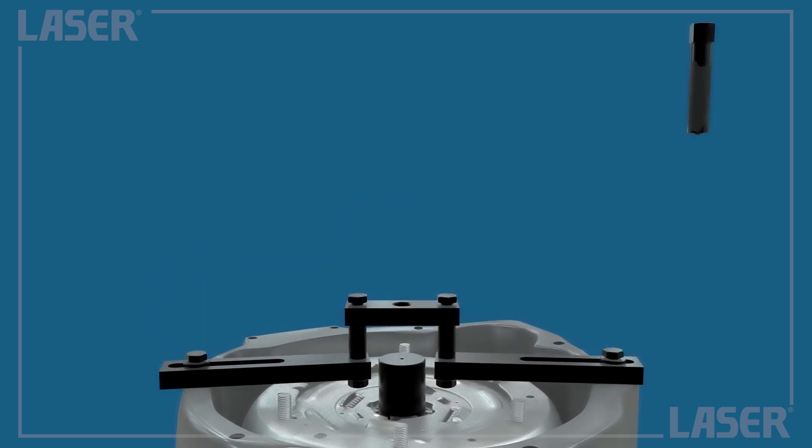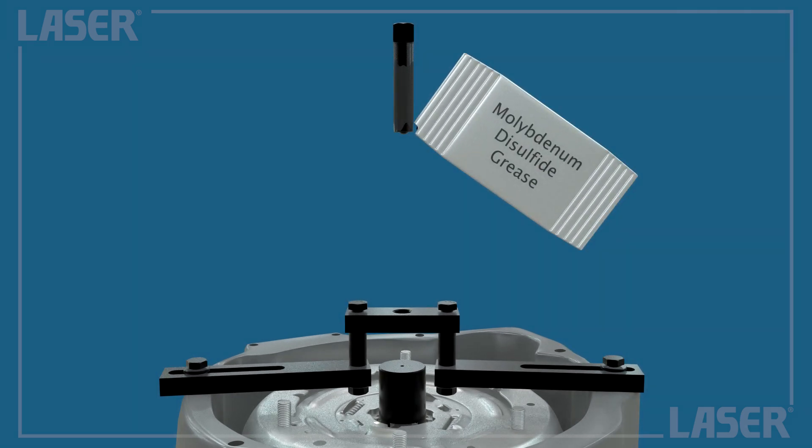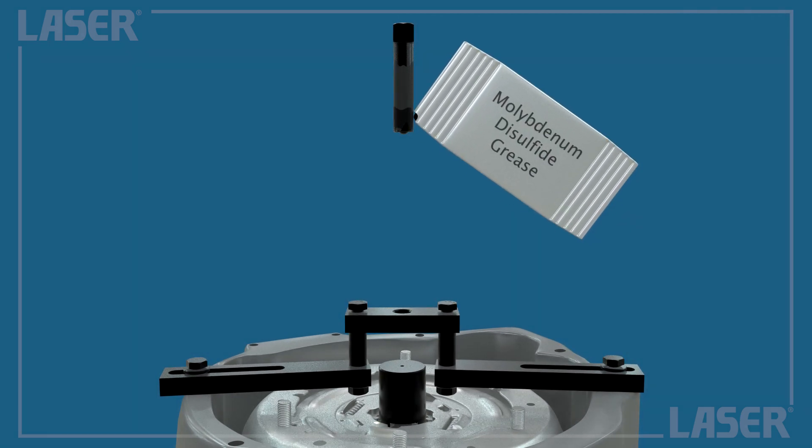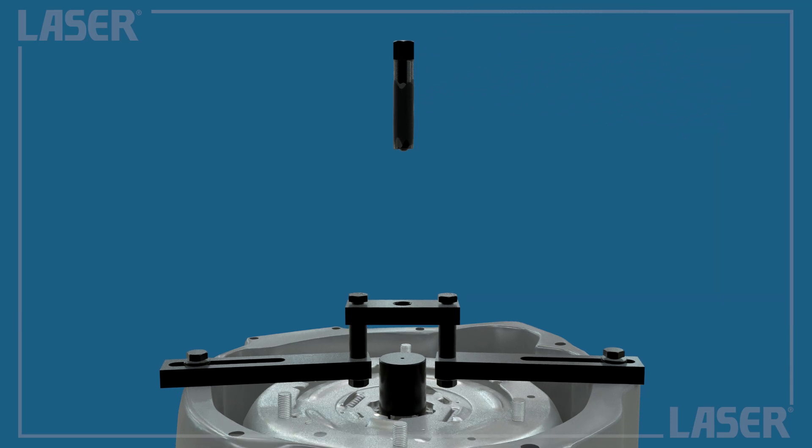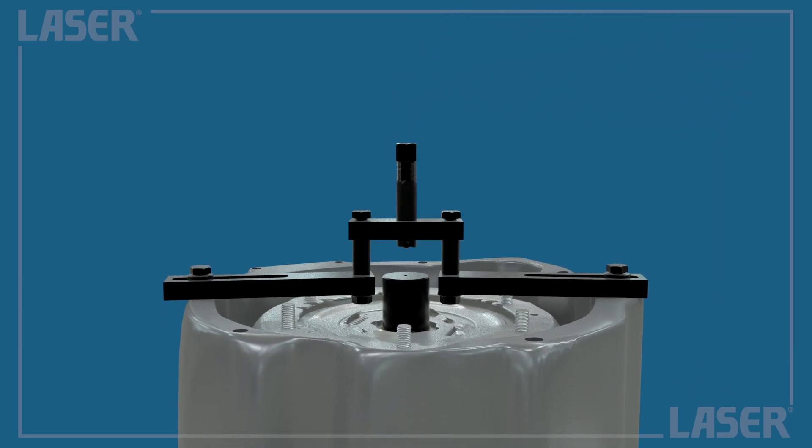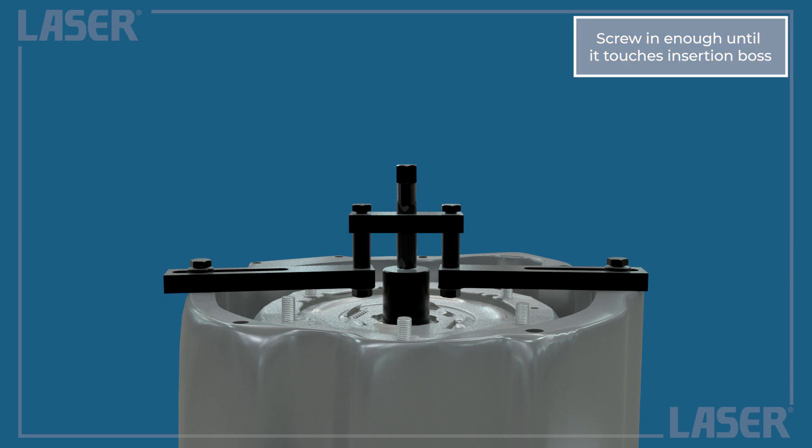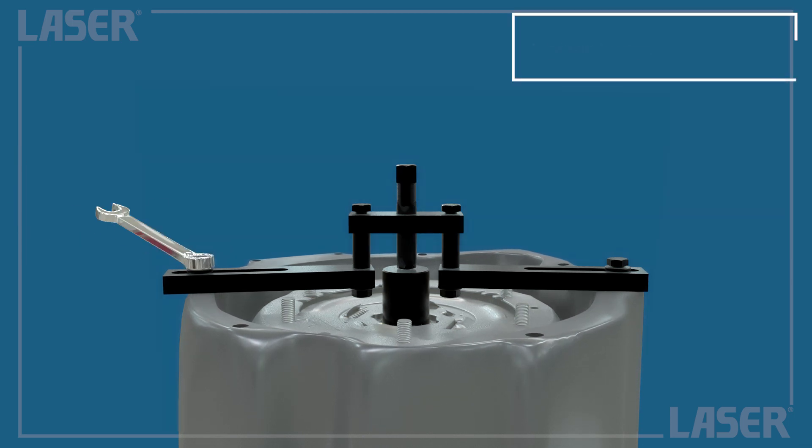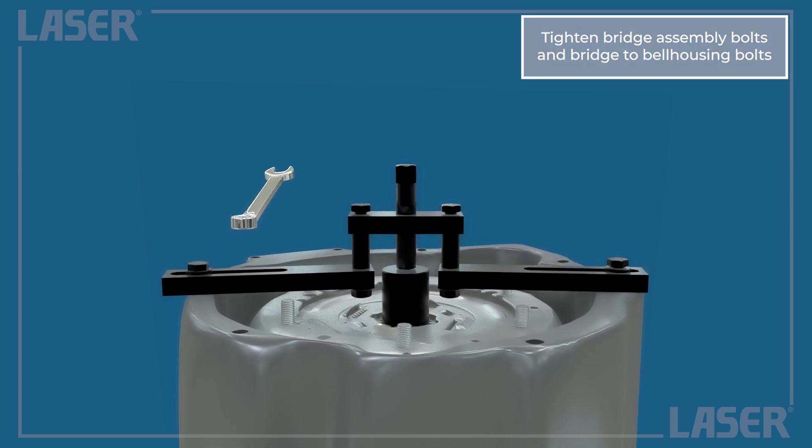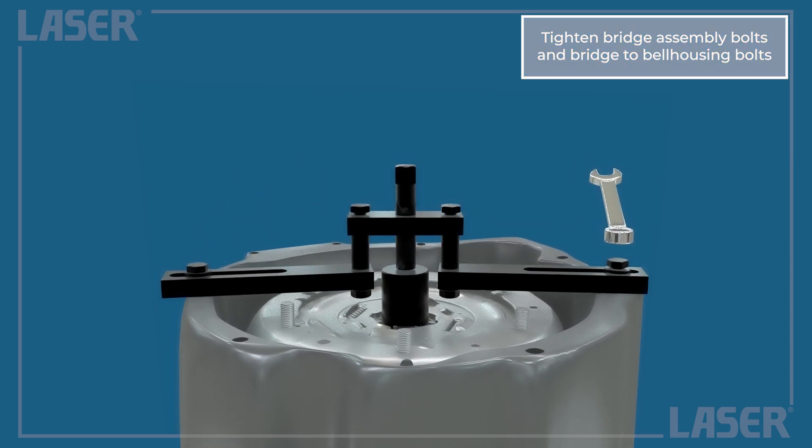Again, ensure the force screw has a sufficient amount of grease before fitting it into the insertion bridge. Ensure the bridge assembly bolts and bridge to bell housing bolts are secured tightly.